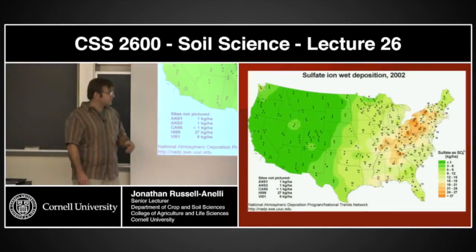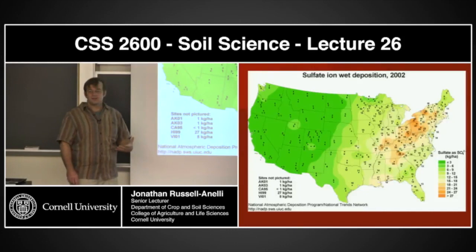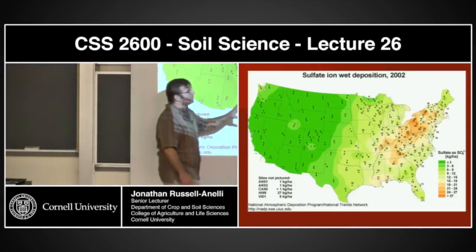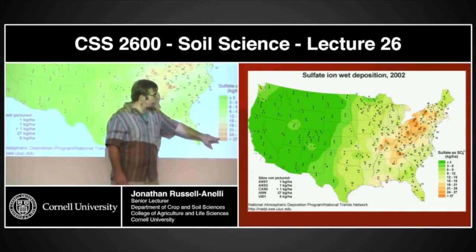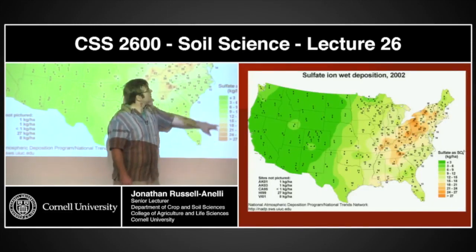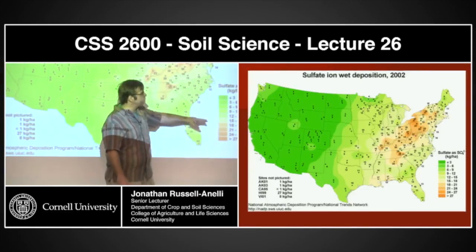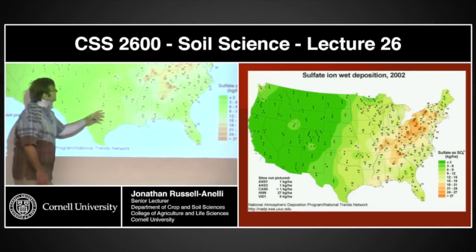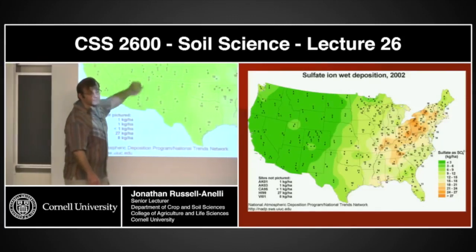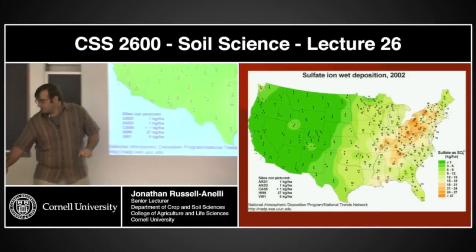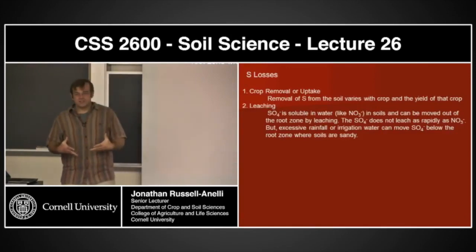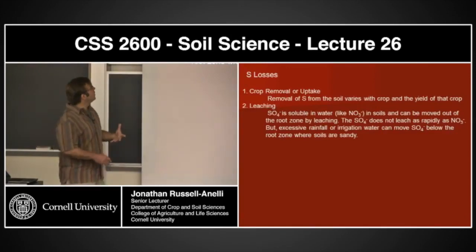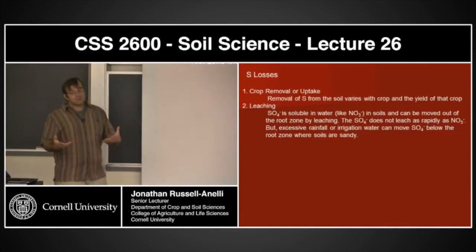You've seen a slide like this before — I showed it with nitrate and I showed it with acid. Basically, we're looking at those coal-fired plants and we're looking downwind. The larger and more orange the color, the higher the concentration; the darker the green, the less the concentration. Those are the sources. What are the losses? An obvious one is crop removal and uptake by the plant.